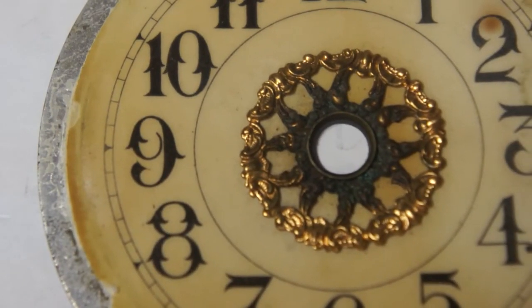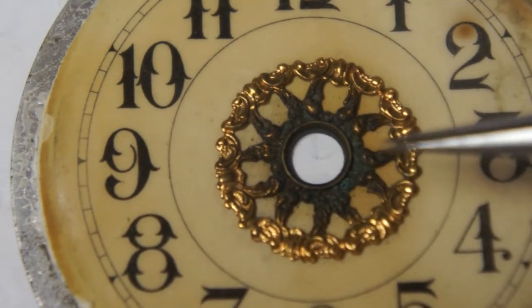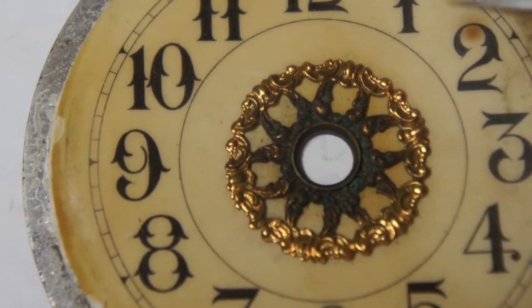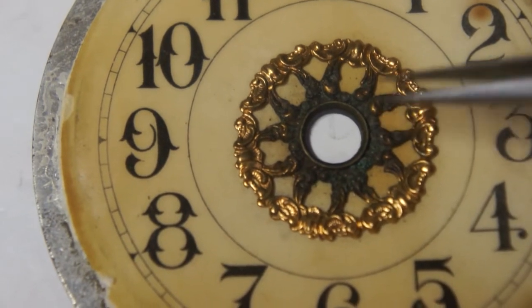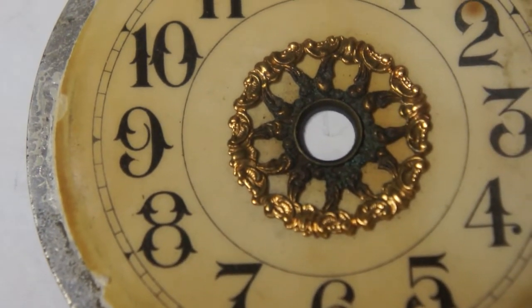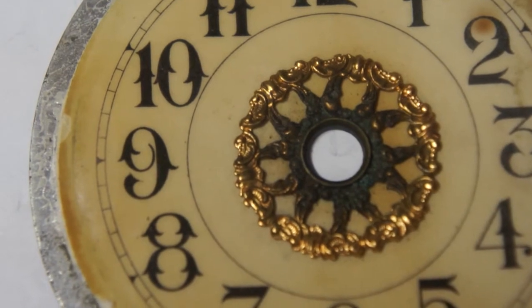The center part of the dial has a decorative brass piece that's plated with gold. The plating is real thin and you can see on the inside the brass is starting to corrode, deteriorate a little bit. You can see some green corrosion in there. I'm not going to do anything with that.